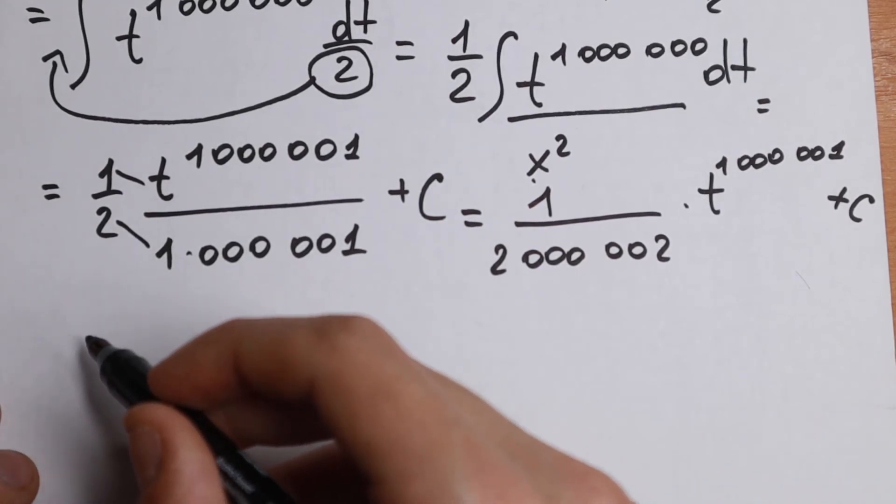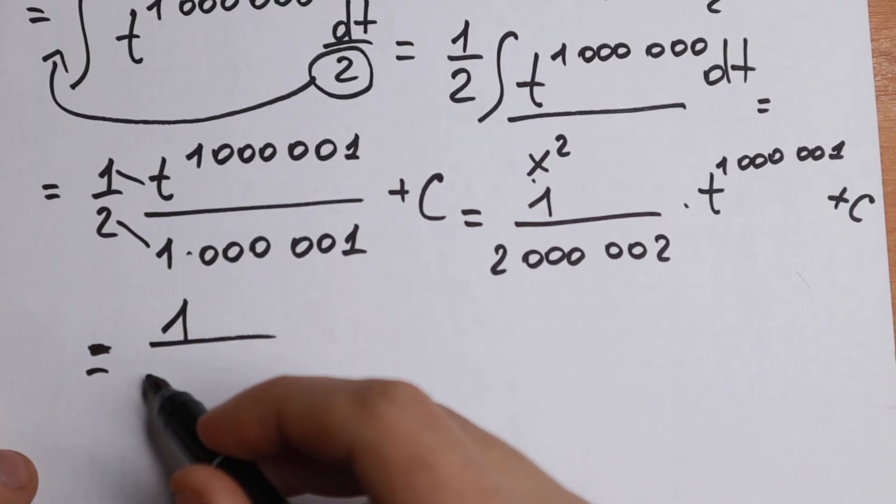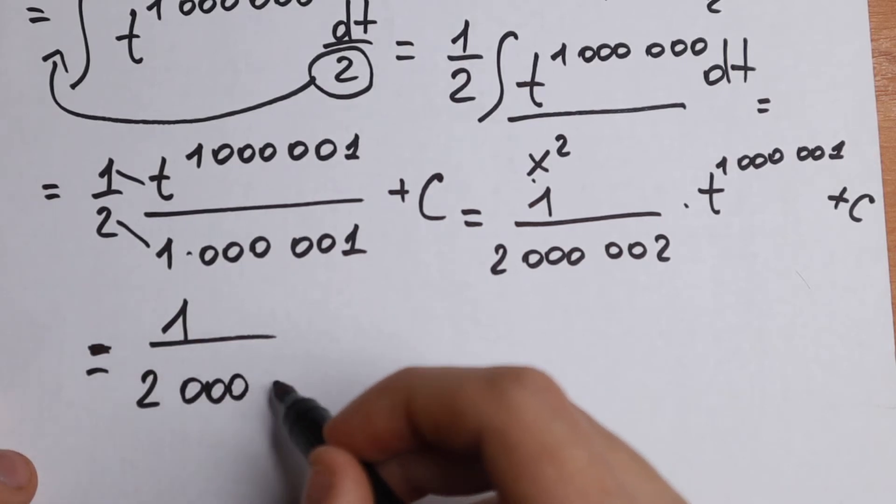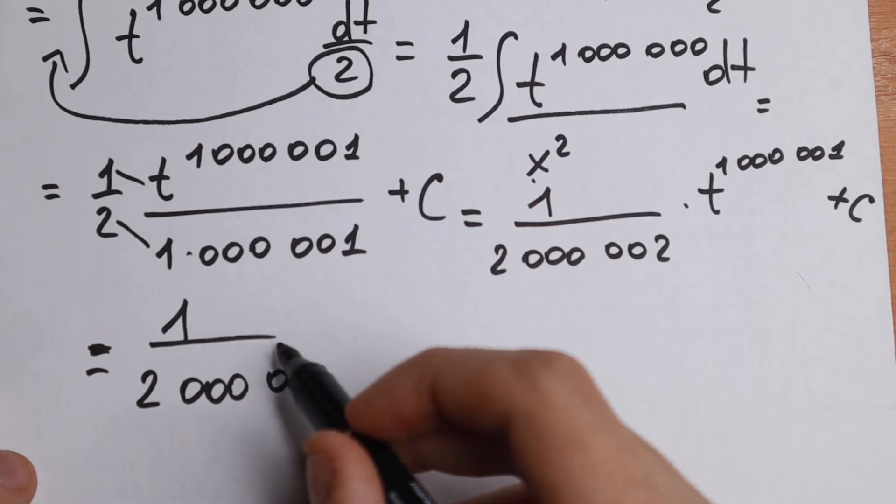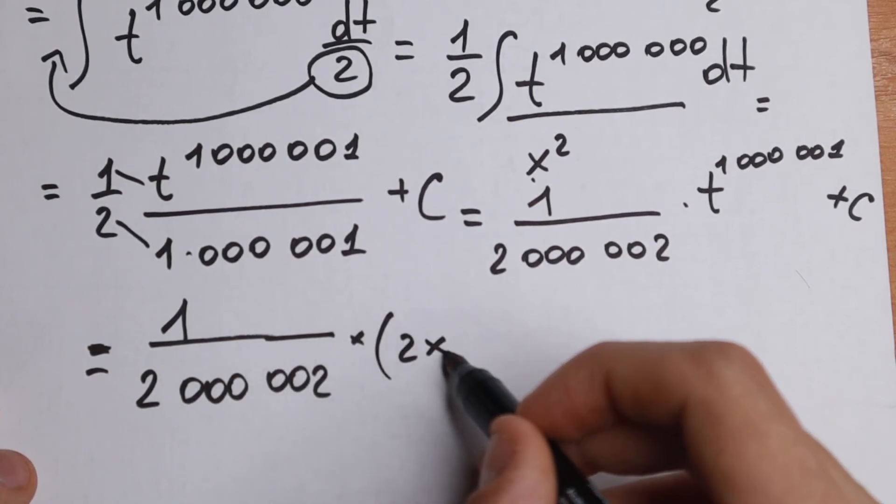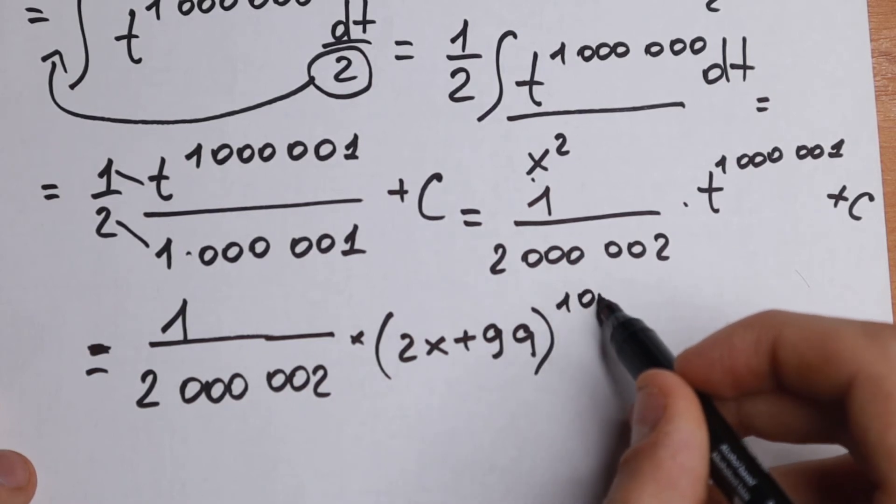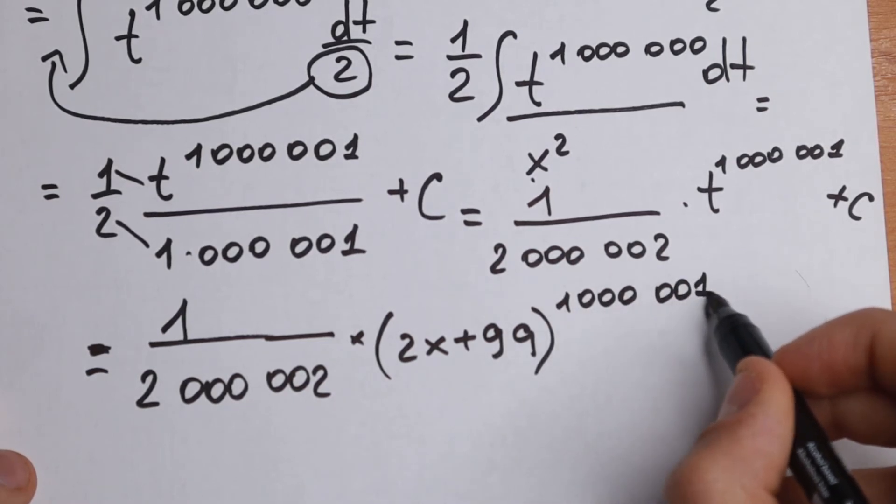We will have the final answer: 1 divided by 2,000,002 times (2x + 99) to the power 1,000,001, plus c. And this will be our answer.